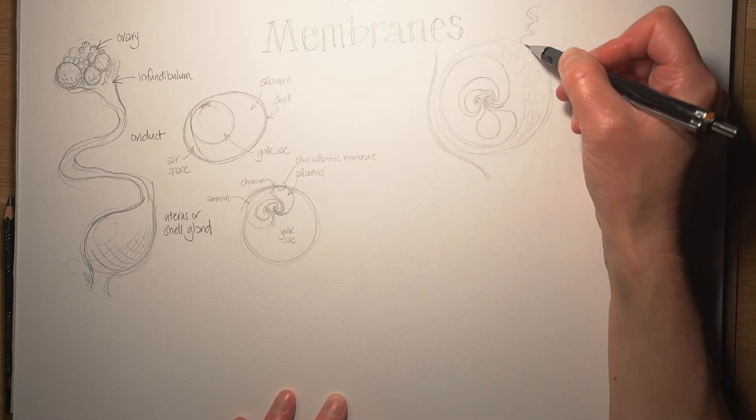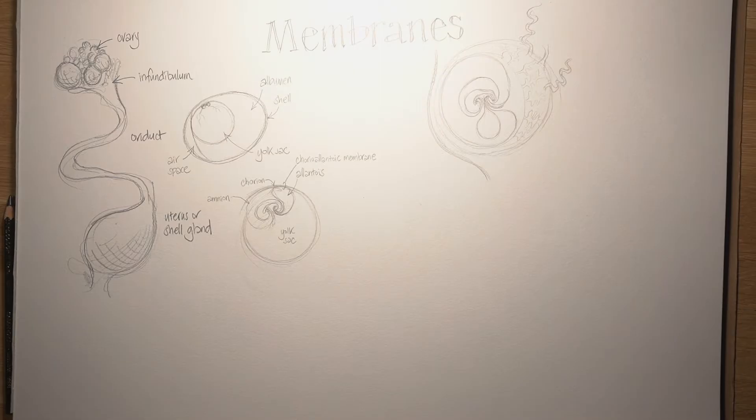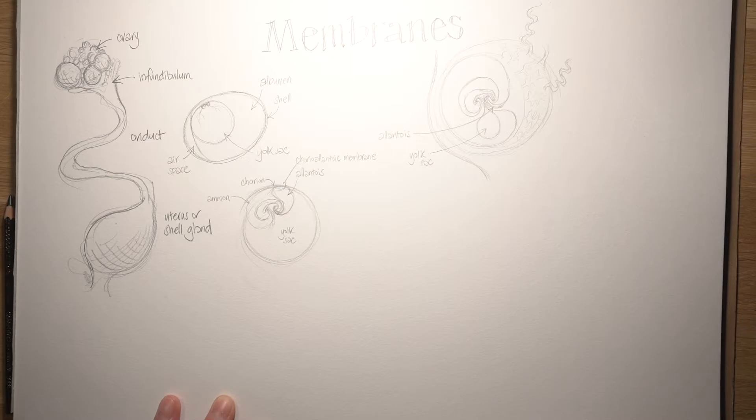Here's a little human embryo at about four weeks of development. Again, you can see that it is floating inside a bubble, a little pond of amniotic fluid. It also has a yolk sac, even though that yolk sac is full of fluid rather than nutrients. It even has an allantois, but this is much smaller than it is in the chick. It's pretty much vestigial in the human.